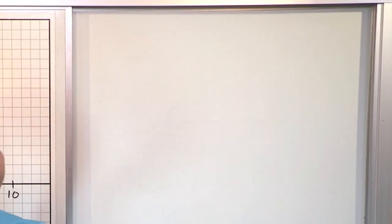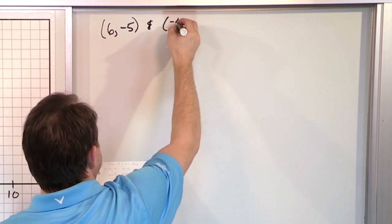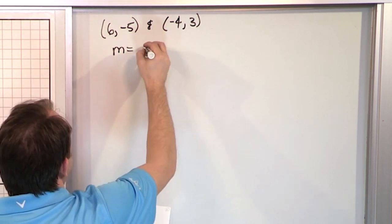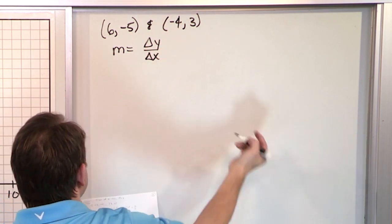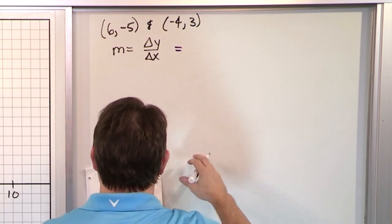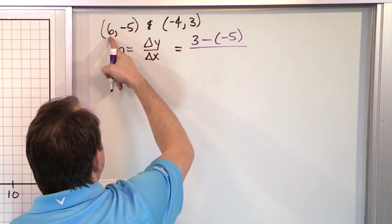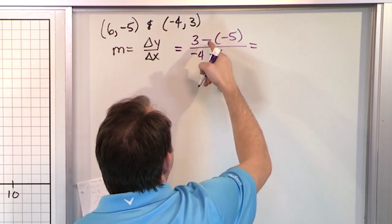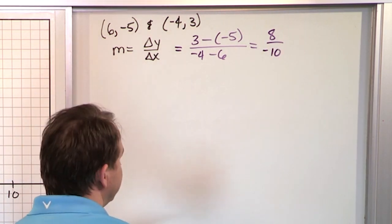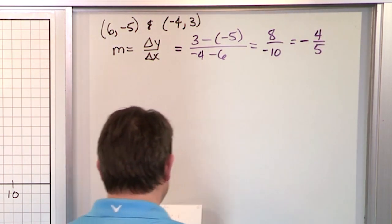Next problem: find the slope between (6, -5) and (-4, 3). Delta y over delta x: 3 minus negative 5 on top, negative 4 minus 6 on the bottom. The top becomes 3 plus 5, which is 8. The bottom is negative 4 minus 6, which is negative 10. Simplify by dividing both by 2: the answer is negative 4 fifths.